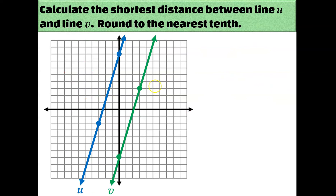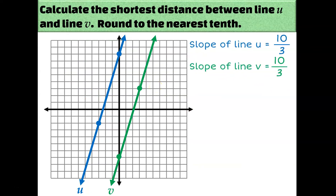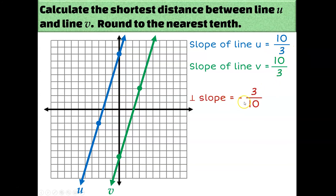These two lines are parallel because they both have a slope of 10 thirds — you go up 10 and to the right 3, and the same for the green line. A perpendicular slope would be negative 3 tenths. So I could pick any point and count down 3 and to the right 10, drawing a line perpendicular to the blue line that passes through the green line. But it's really unclear exactly where it passes, and that would be true no matter what point you picked — none of them cross at a nice, easy-to-identify point.